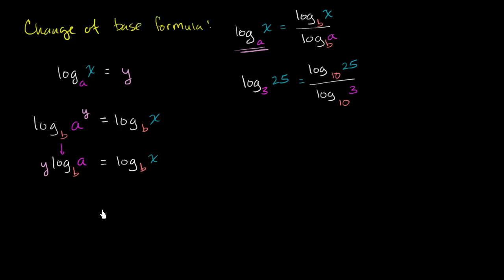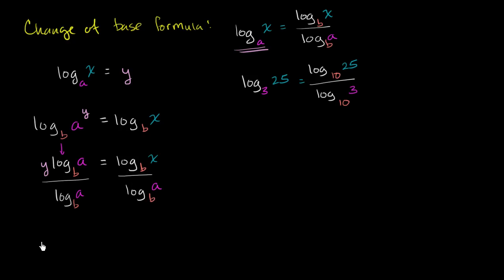Now let's just solve for y — this is exciting, because y was our original expression. If we solve for y, we're going to express it in terms of logarithm base b. To solve for y, we just divide both sides of this equation by log base b of a. On the left-hand side, those two cancel out, and we are left with — drum roll — y is equal to log base b of x divided by log base b of a.